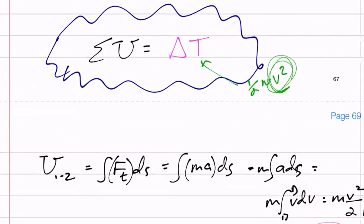Here's topic number eight: sum of all work equals delta T. Beginning of next class, we're going to take that equation and convert it to conservation of energy. You'll have two tools in your back pocket: either start with sigma U equals delta T, or you can start with conservation of energy.